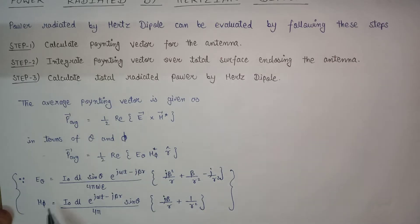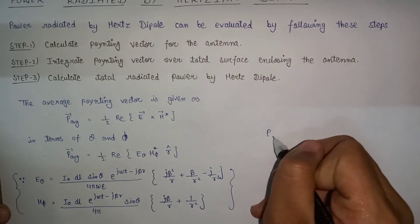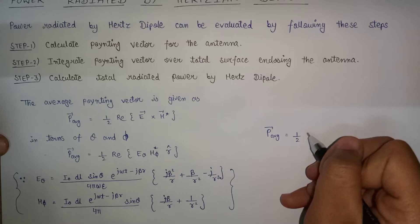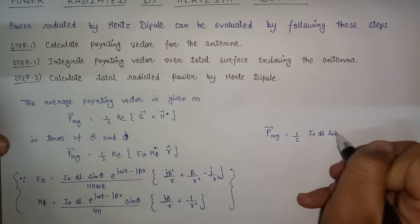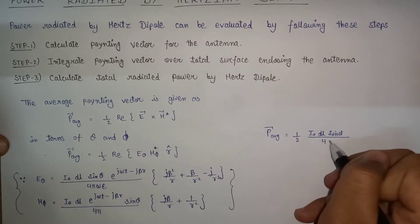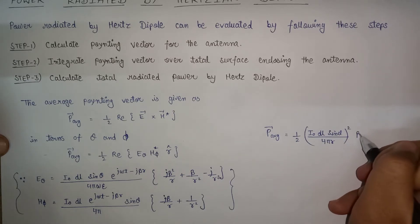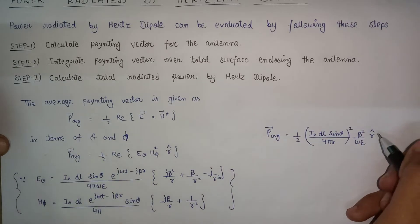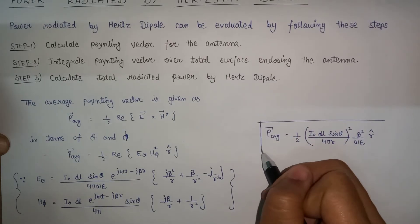Now if we substitute the values of E_theta and H_phi into the expression, the value of P_average becomes one-half multiplied by (I-naught DL sin(theta) over 4*pi*r) squared, multiplied by beta-squared over (omega*epsilon), times R-hat. This completes step number one.